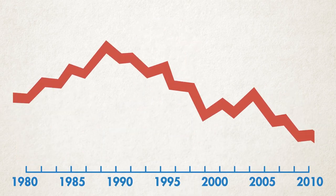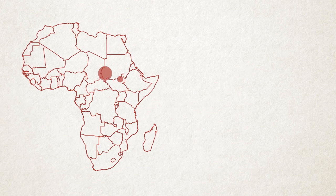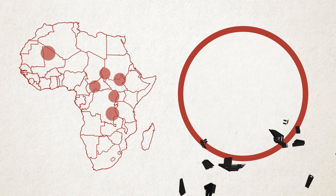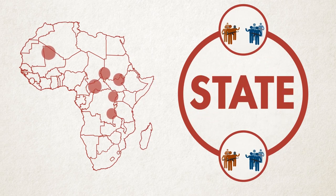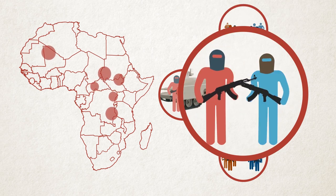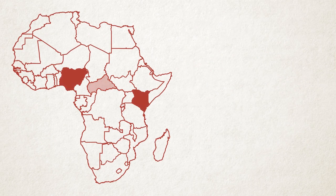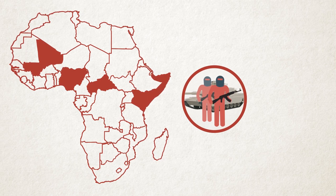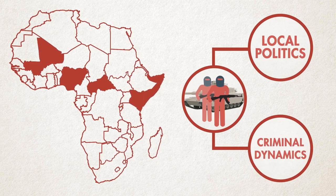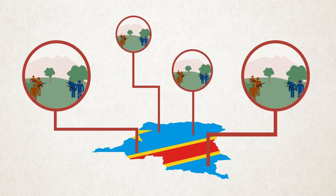Since 2010, violence in Africa has been on the rise. Contemporary African conflicts are increasingly fragmented, fought on a smaller scale and on the peripheries of states. More non-state actors are involved and insurgents are often divided. The spread of transnational organized crime, including terrorism, is often linked with local politics and criminal dynamics. Lower-intensity conflict is becoming more prevalent.